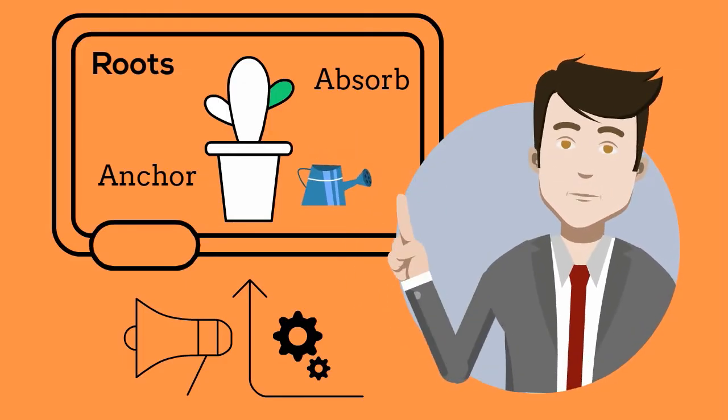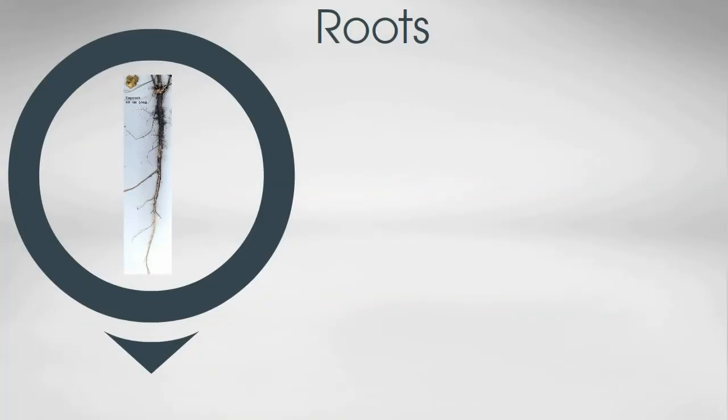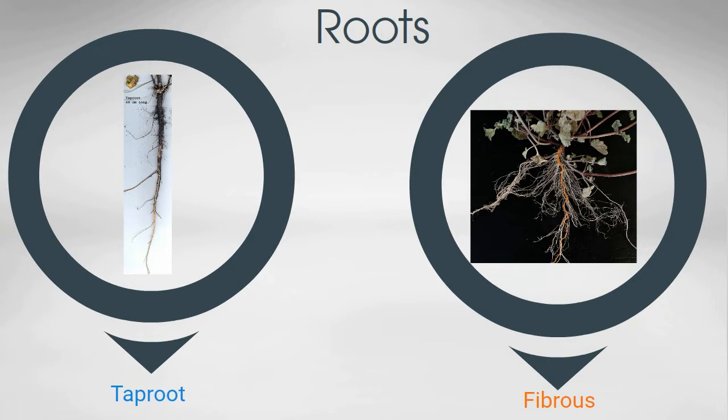There are at least two main types of roots. A taproot system consists of a long, thick root and branching roots that grow off this main root. The second type is called a fibrous root system and it consists of several main roots that branch repeatedly and form a mass of roots.